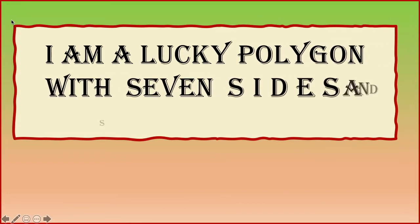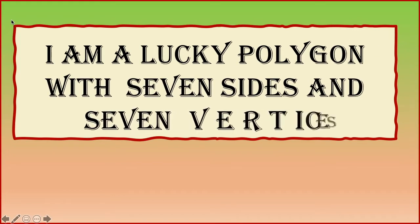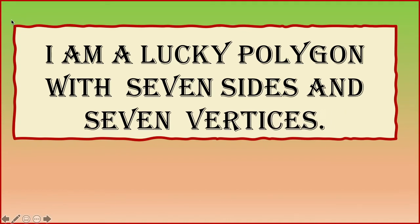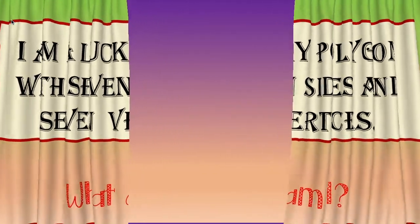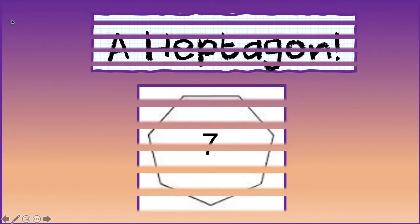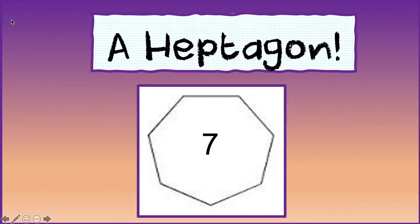Here is riddle number seven. I am a lucky polygon with seven sides and seven vertices. What am I? A heptagon. You got it.